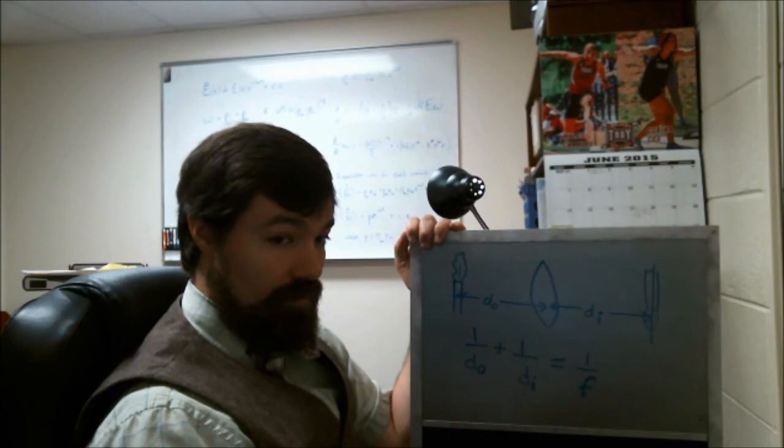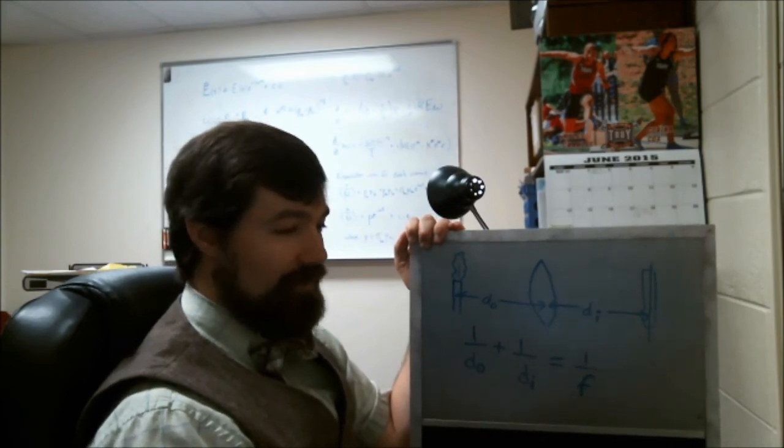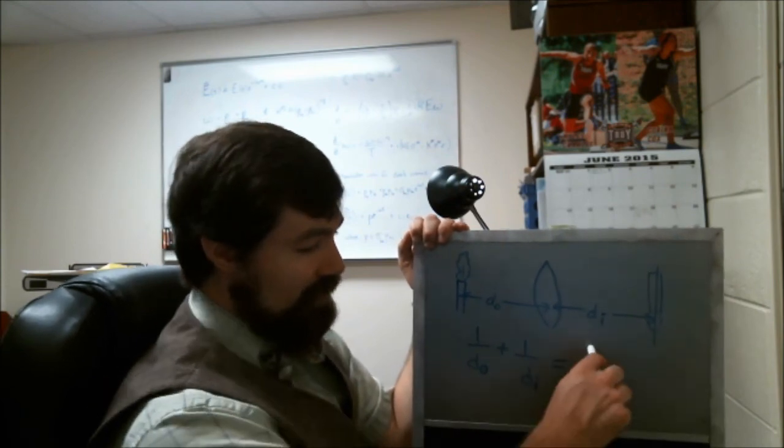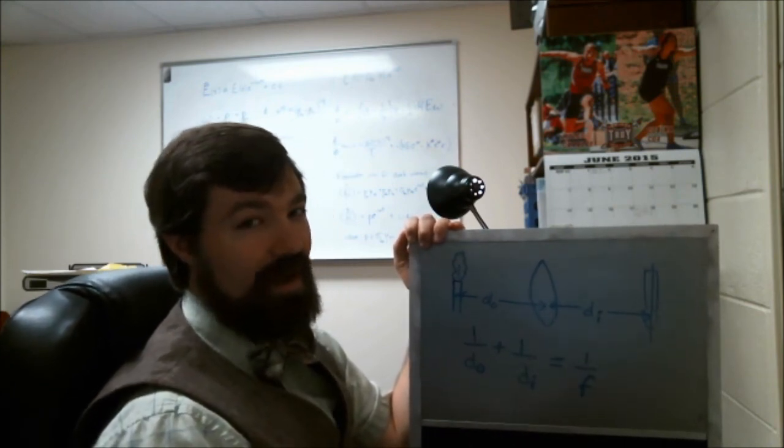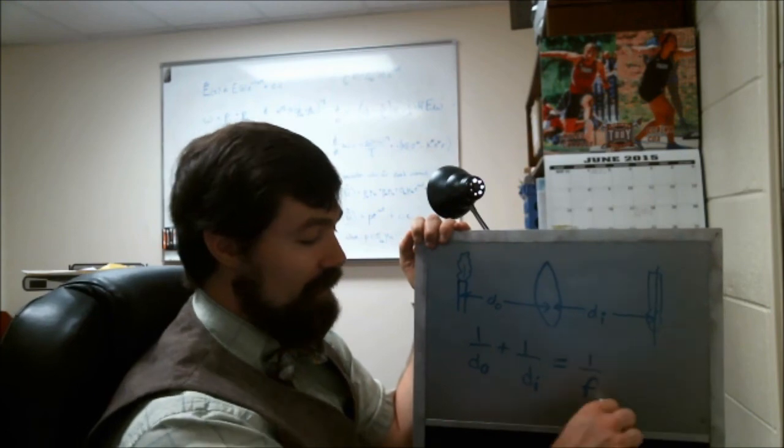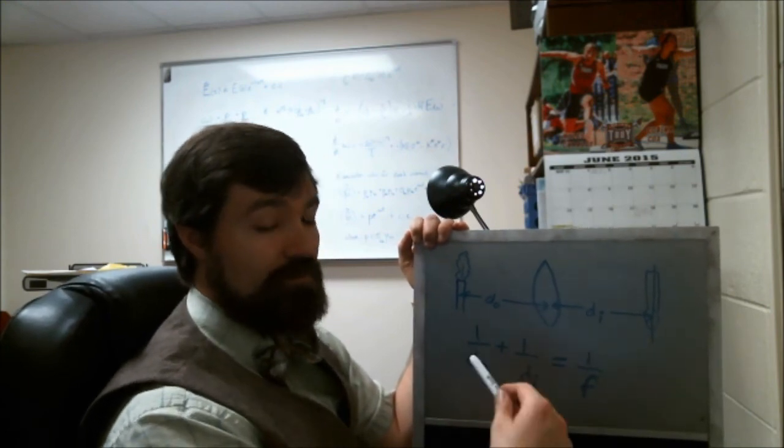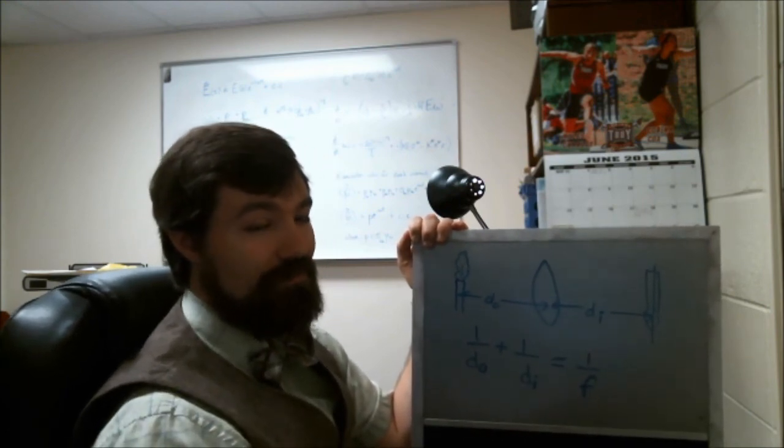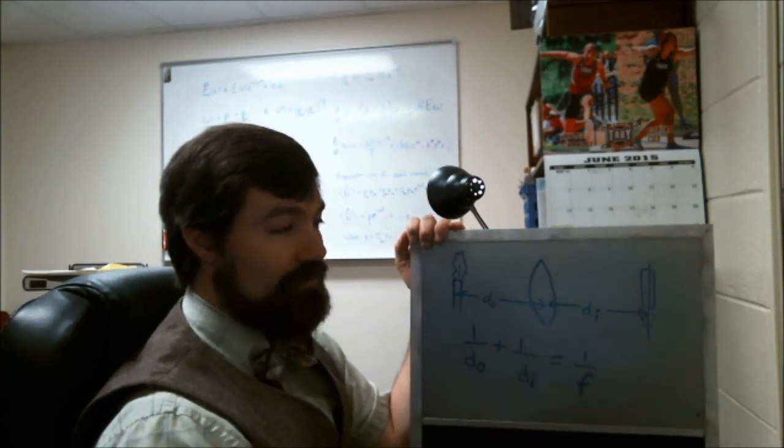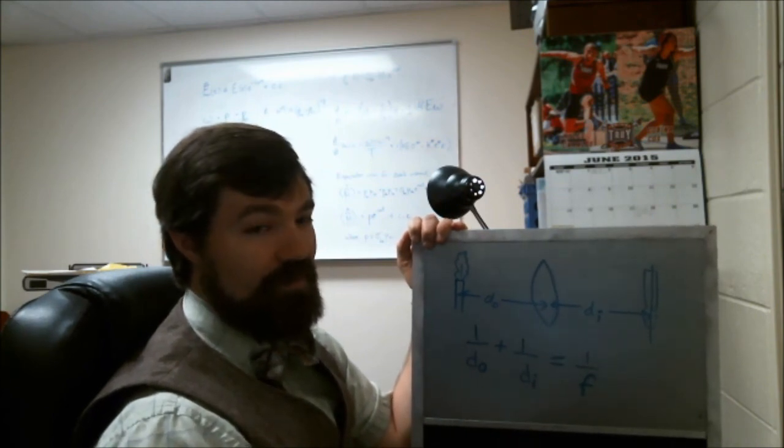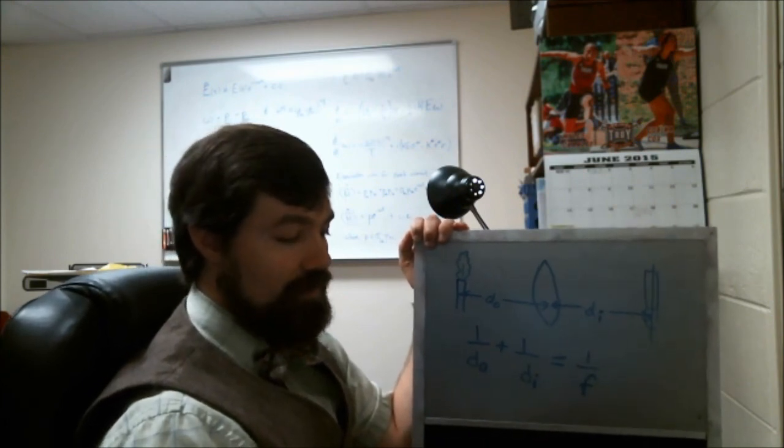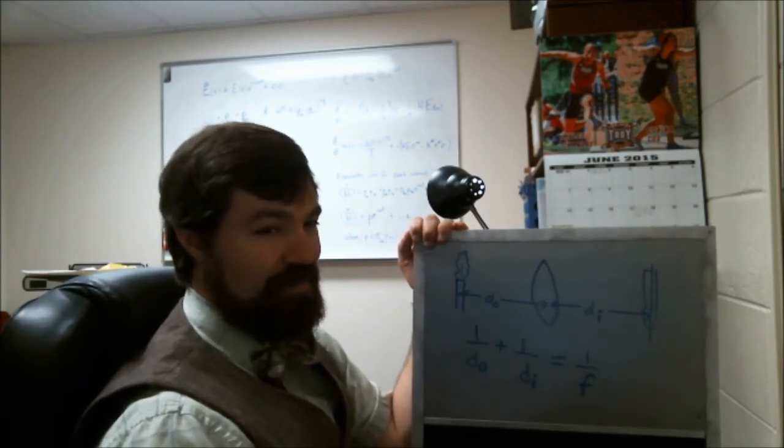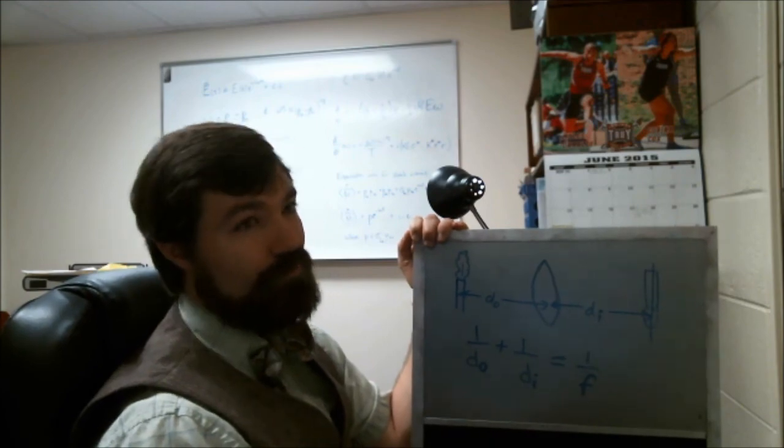So the only other vocabulary word that I wanted to give you for this particular lab is that 1 over F, 1 over the focal length is sometimes called the lens power. And so if F is in meters then the lens power is in diopters. So if you have a focal length of 2 meters then you have a lens power of 0.5 diopters. If you have a focal length of 0.25 meters then you have a lens power of 4 diopters.